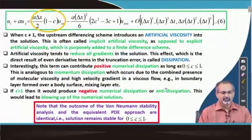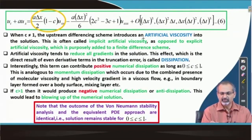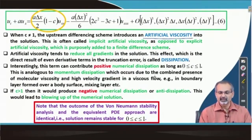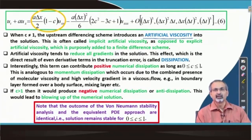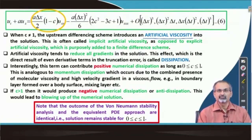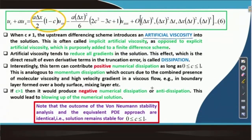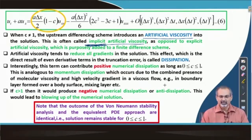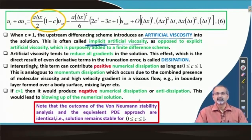Whenever c is not equal to 1, this term is going to introduce a very important property called artificial viscosity — it is going to play a role similar to molecular viscosity seen in viscous simulations through Navier-Stokes equations. This comes automatically by virtue of the numerical scheme you are using, so it is implicitly introduced. You are not explicitly adding numerical viscosity or artificial viscosity; it is coming implicitly through the kind of numerical scheme used to discretize the linear wave equation.